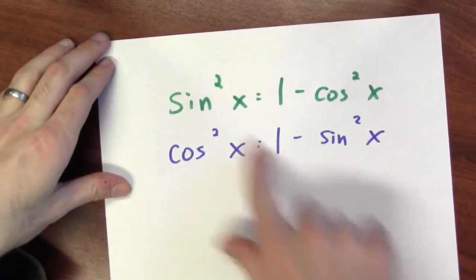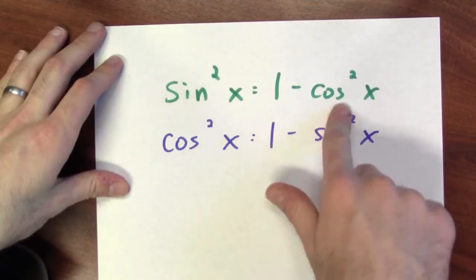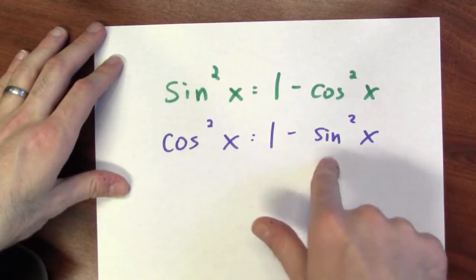I can replace sine squared x by 1 minus cosine squared, and I can replace a cosine squared by 1 minus sine squared. This is often useful.